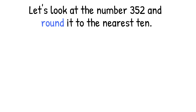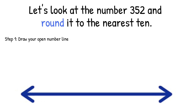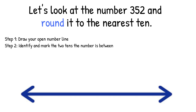Let's look at the number 352 and round it to the nearest 10. Step 1: Draw your open number line. Step 2: Identify and mark the two 10s the number is between. So for 352, the number is between 350 — that's the lower 10 — and 360, that's the higher 10.